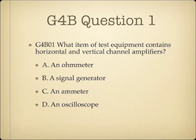Question 1. What item of test equipment contains horizontal and vertical channel amplifiers? A, an ohmmeter. B, a signal generator. C, an ammeter. Or D, an oscilloscope.